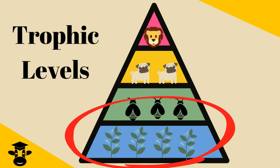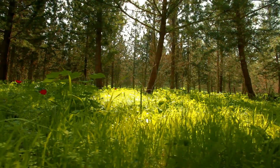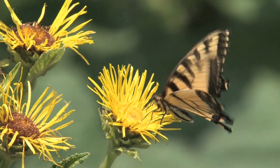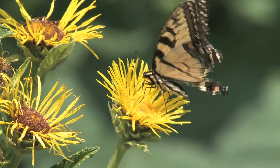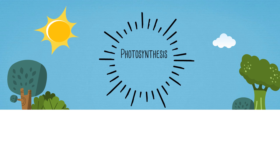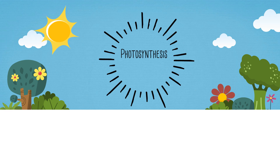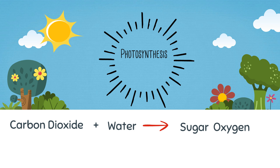Some common examples of autotrophs include plants, grass, trees, and flowers. Autotrophs produce their energy from the sun in a chemical process called photosynthesis. Autotrophs take carbon dioxide, add water and sunlight, and produce sugar and oxygen. The energy for photosynthesis originates at the sun and arrives at the earth as sunlight.